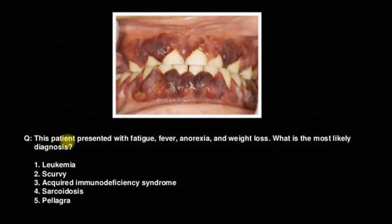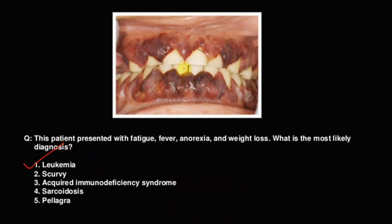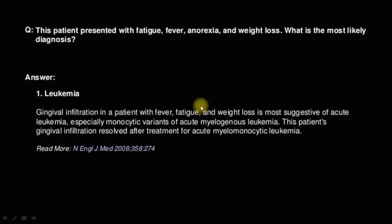This is the picture of gum infiltration in a patient with AML — acute myelogenous leukemia. The answer is leukemia. The patient presented with fatigue, fever, anorexia, and weight loss. The most likely diagnosis is leukemia. You can see the gum infiltration with hyperplasia present in acute myelogenous leukemia. This gingival infiltration resolves after treatment of acute myelogenous leukemia.